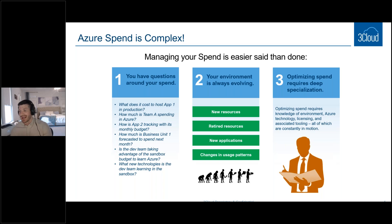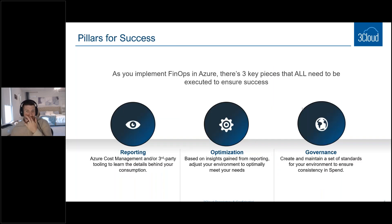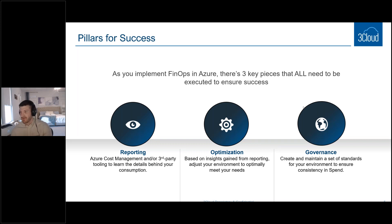You have to truly understand Azure. You can't just say 'I'm going to change this because it saves money — I checked the cost estimator.' What repercussions does that have down the line for your environment? There are really three pillars to success: all three need to happen for you to implement a successful financial operations program in Azure. Those are reporting, optimization, and governance.